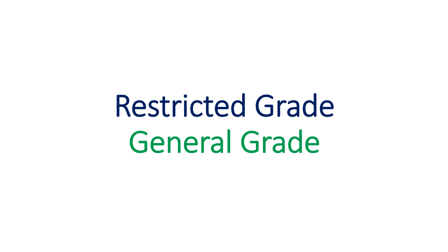There are two grades of licenses: restricted and general. Examinations are conducted at any of the wireless monitoring stations or international monitoring stations. The examination has two parts — Part A is basic electronics and Part B is radio regulations. The restricted grade examination is for 1 hour and has 25 questions each, while general grade examinations have 50 questions each and are for 2 hours.